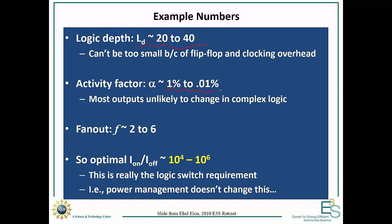Then we have our activity factor, which is around 1% to 0.01%. And that's just because in a large complex circuit, most of the outputs won't be changing in any given clock cycle. And you have a typical fan out of around 2 to 6. And so when you plug these numbers in, we find that our I on over I off is around 10 to the 4 to 10 to the 6.